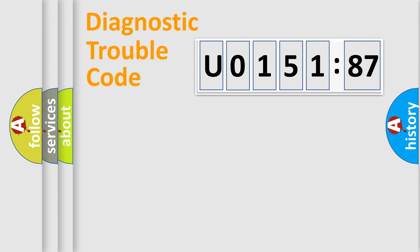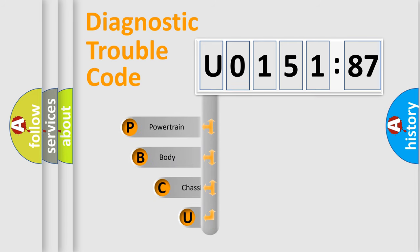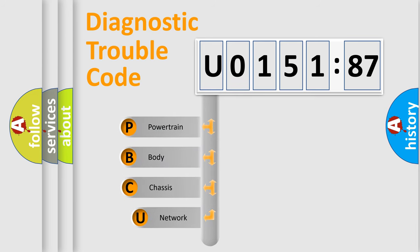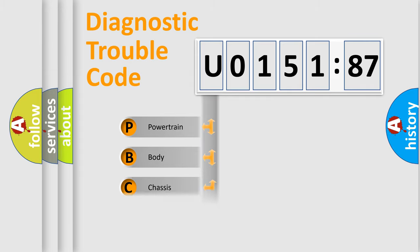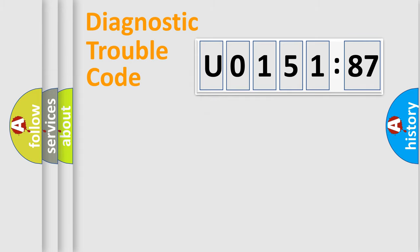Let's do this. First, let's look at the history of diagnostic fault code composition according to the OBD2 protocol, which is unified for all automakers since 2000. We divide the electric system of an automobile into four basic units: Powertrain, Body, Chassis, and Network.